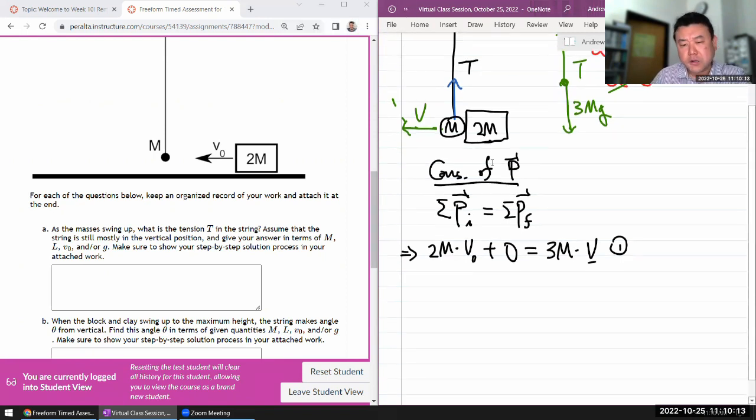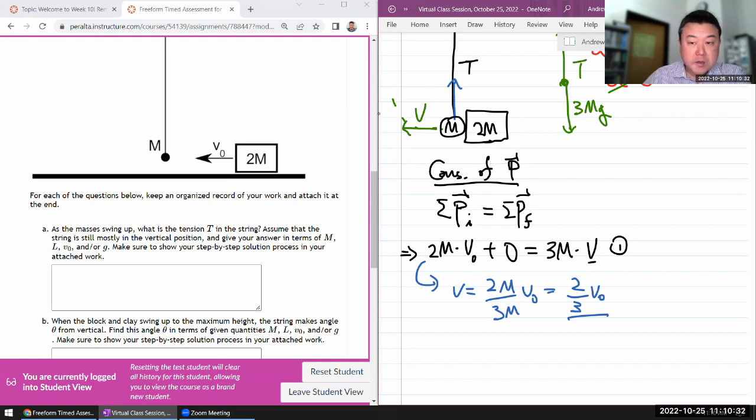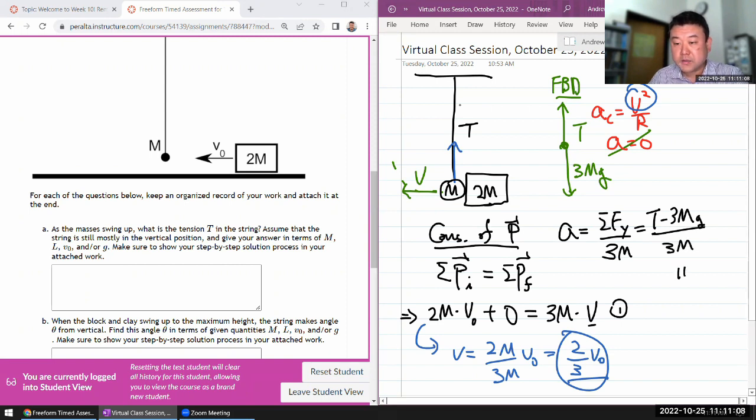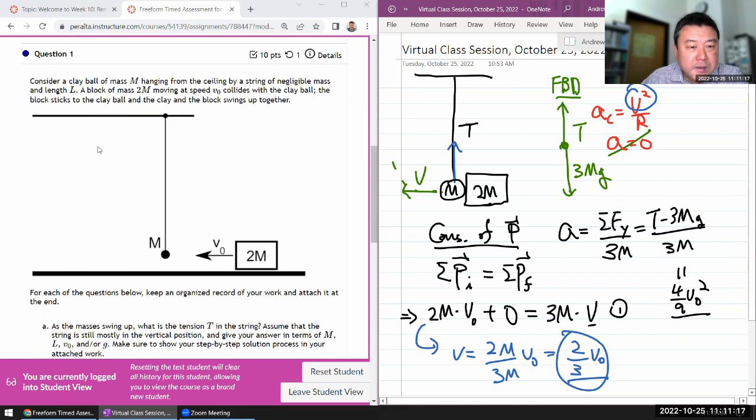So let me use conservation of momentum. What I'm saying is that total momentum initially all added together is equal to total momentum finally all added together. So total initial momentum, I'm just going to define leftward as positive so I don't have unnecessary signs. I have momentum of the mass 2M, so 2M times V naught, plus I have momentum of this ball which is zero. It's not moving. It's equal to, they are both together moving to the left, and the mass of the thing that's moving together is 3M, and they're moving at some speed of V. So 2M V naught plus 0 equals 3M V.